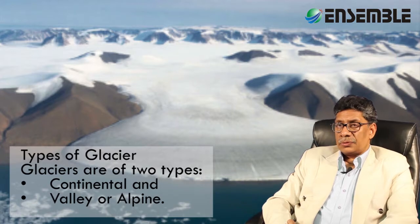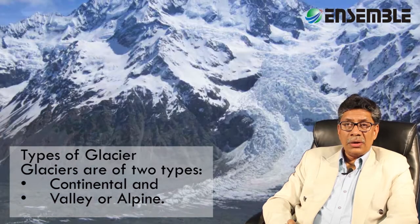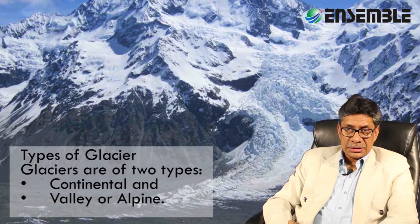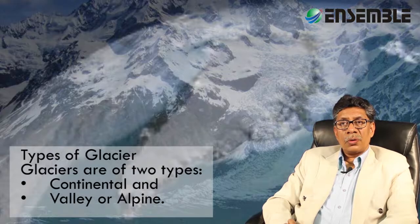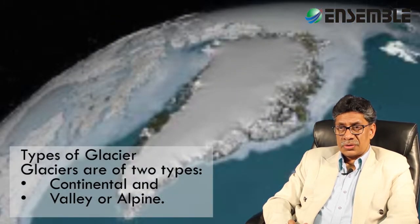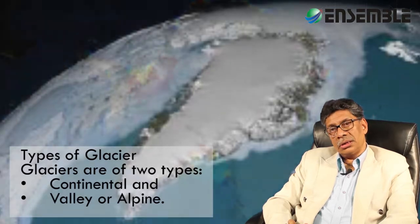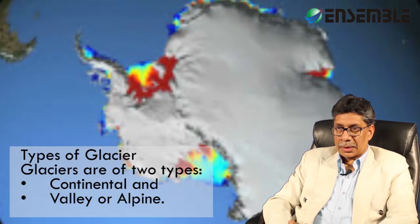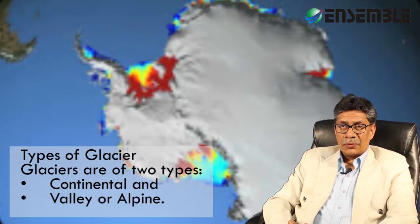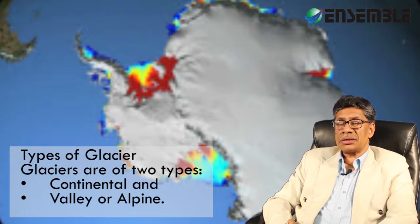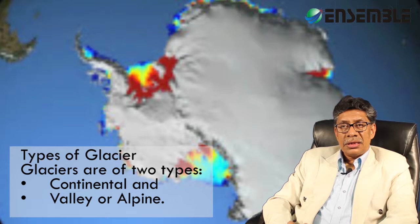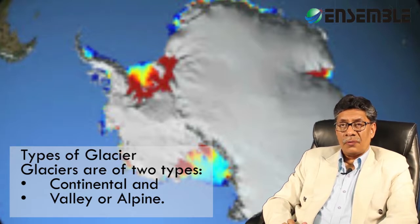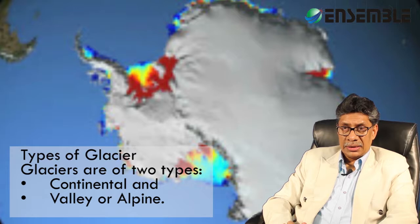Glaciers are of two types: continental glaciers and valley or alpine glaciers. There are only two large continental glaciers remaining — one in Greenland and the other in Antarctica. However, many mountains around the world have smaller glaciers called alpine glaciers, which mostly move into valleys called glacier valleys.